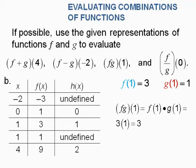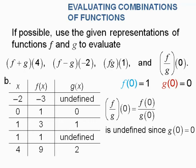For f times g of 1, written as f of 1 times g of 1, when x is 1, f of x is 3. The chart had a typo showing h of x instead of g of x — that should be g of x. When x is 1, g of x is 1. So we get 3 times 1, which is 3.